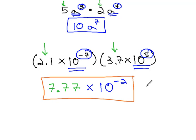Notice our answer is in scientific notation without having to do any converting. When multiplying with scientific notation numbers, multiply the numbers and then add the exponents on the 10.